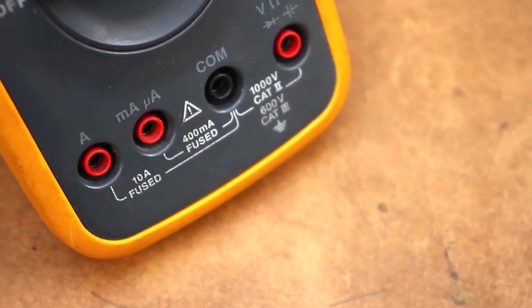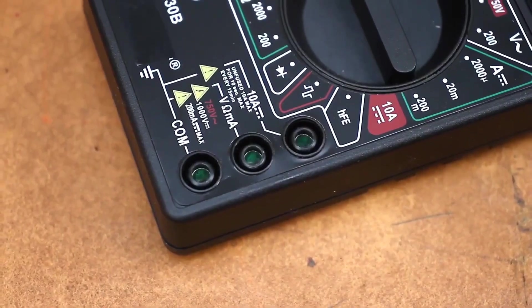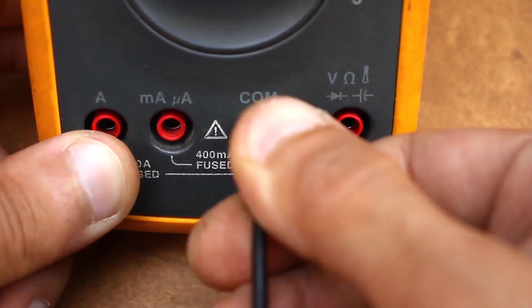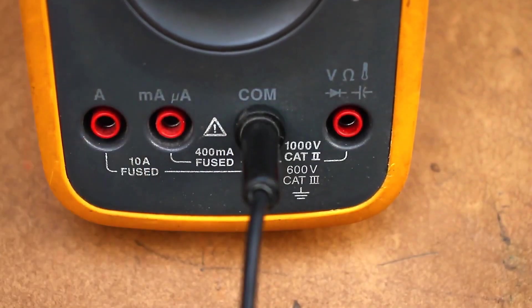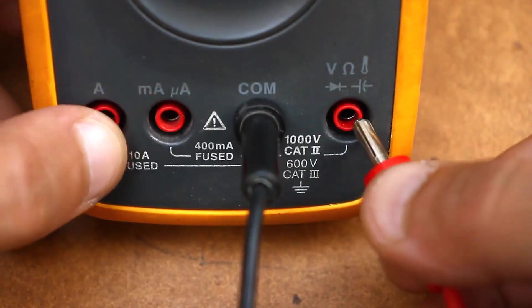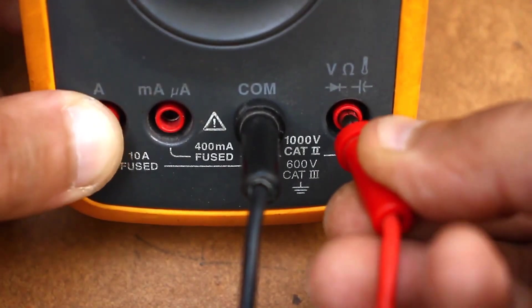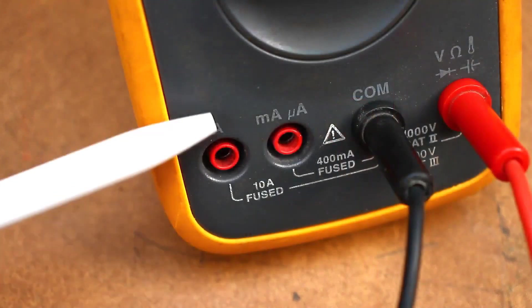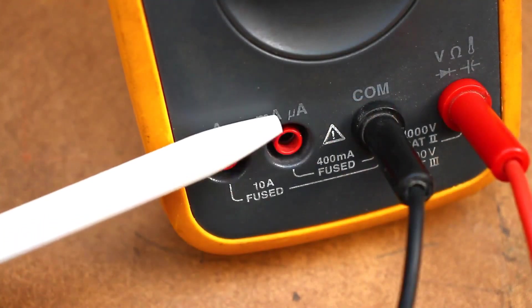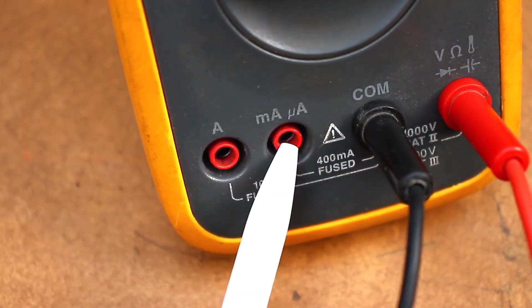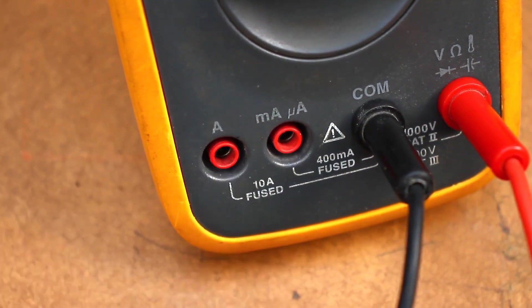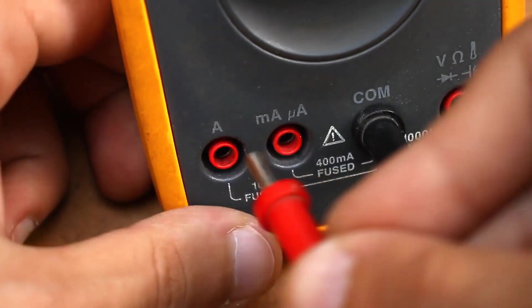Multimeters typically have either three or two standard terminals. The COM is used for all measurements. The black probe is connected there. Next is the terminal that will be present in almost all measurements. The red probe is connected there. The next two terminals are used for measuring current. One is for small currents, the other for larger ones, typically up to 10A. The red probe is moved there if you need to measure current in a circuit.